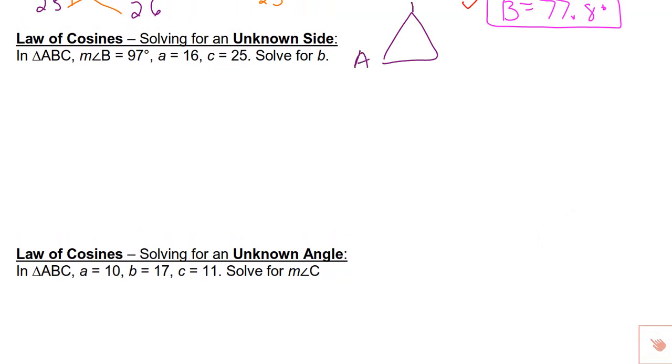They tell me that I have triangle A, B, C. I'm given angle B. I'm given side a across from angle A, and side c across from angle C. I do not have an angle-side pair, so this is why I'm using law of cosines. Because I'm being asked to solve for side b, I'm going to use this rule.